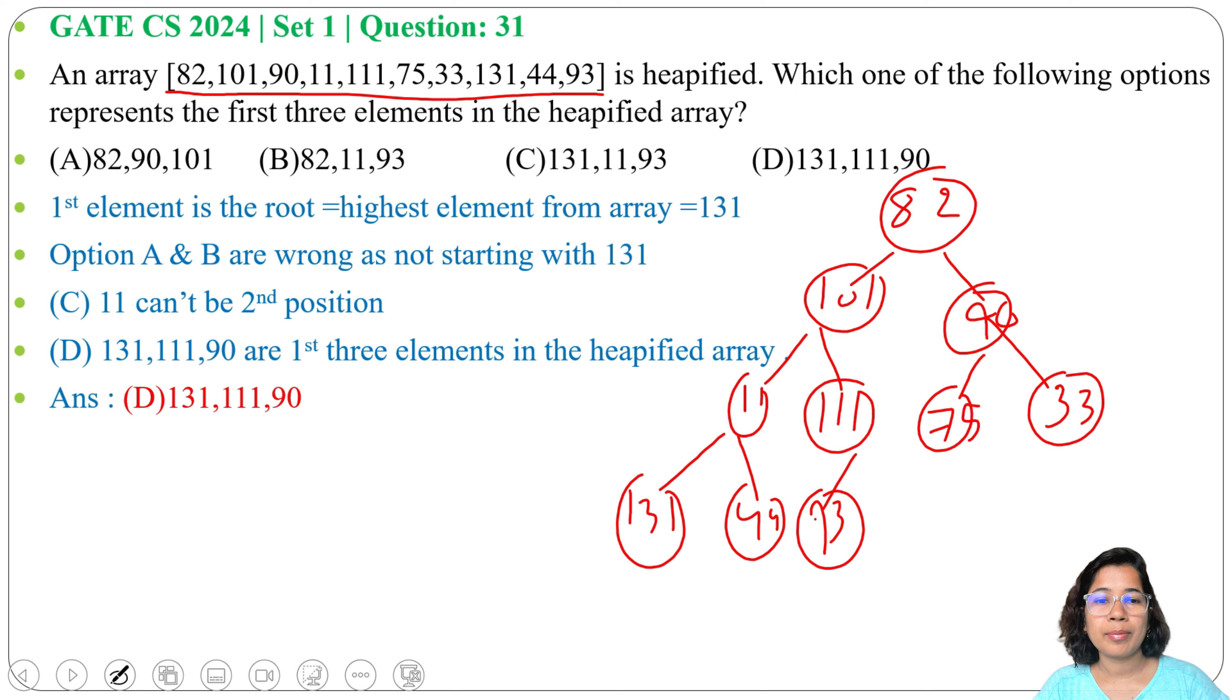Now we need to heapify it. After heapify we will get the max heap. First we compare 82 with its children, 11 and 111. 111 is higher, so here 82 will come and here 111. Next, compare 111 with 101, so 101 will come here and 111 will go here.